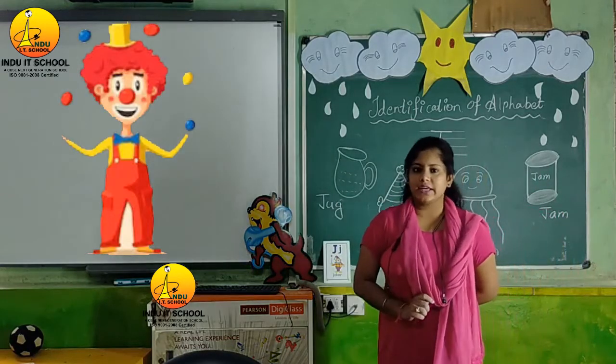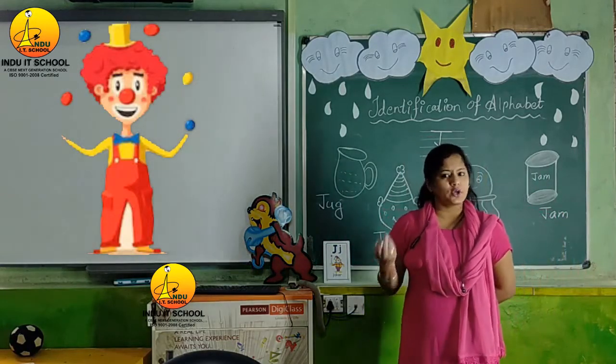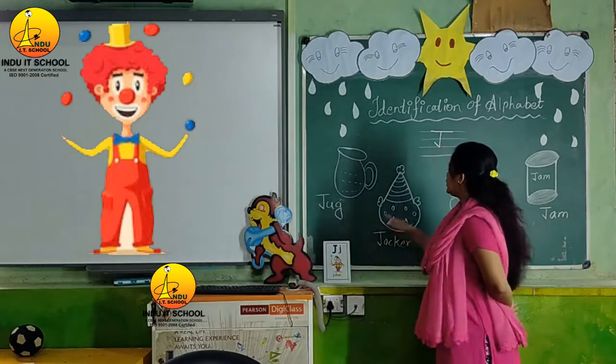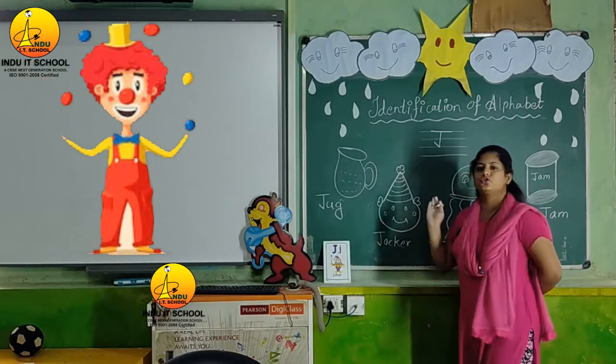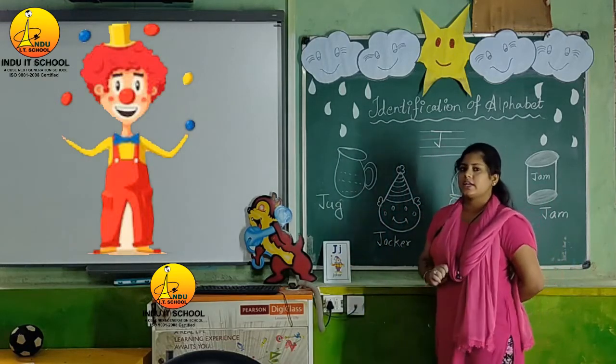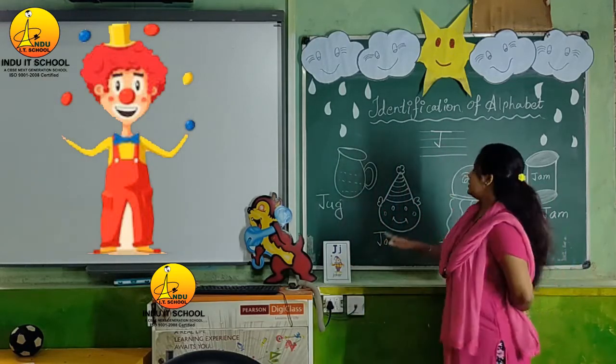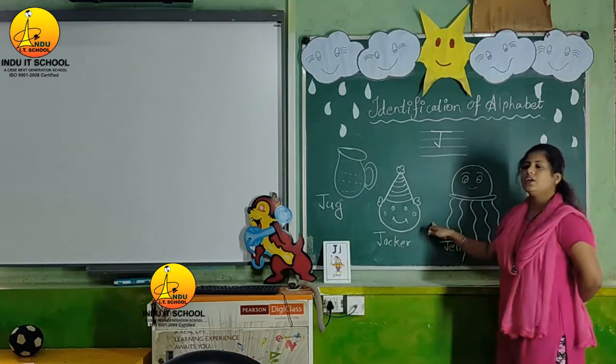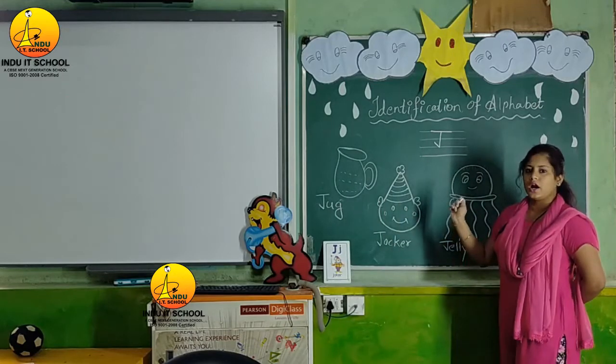The second object is J for juggler. We go to the circus. Why do we go to the circus? Because we see a juggler. J for juggler.